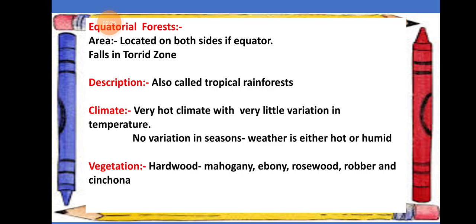Equatorial forests are located on both sides of the equator and are part of the torrid zone. The torrid zone extends from the equator to the Tropic of Cancer in the northern side, and from the equator to the Tropic of Capricorn in the southern side. Equatorial forests are also known as tropical rainforests.